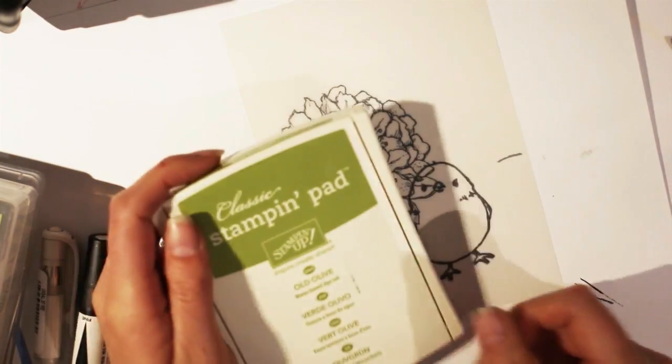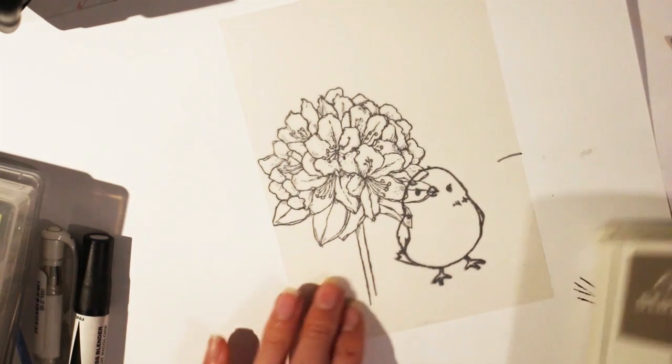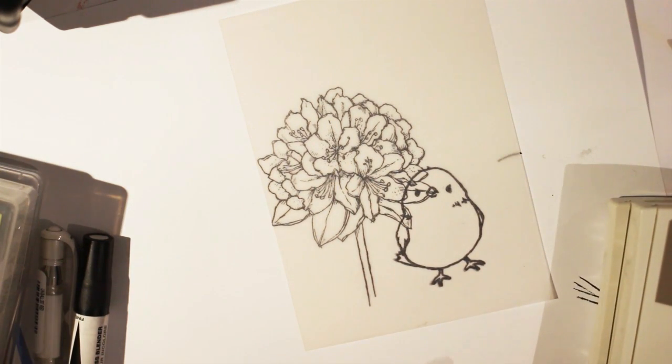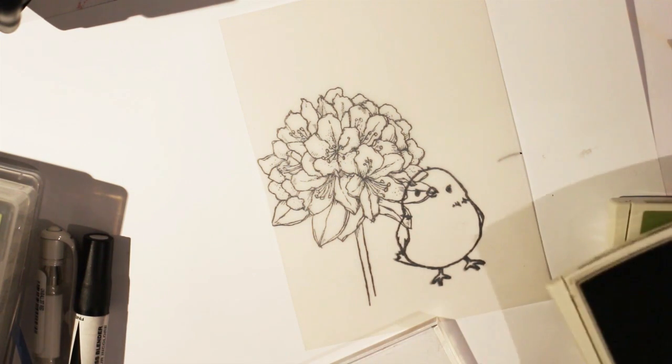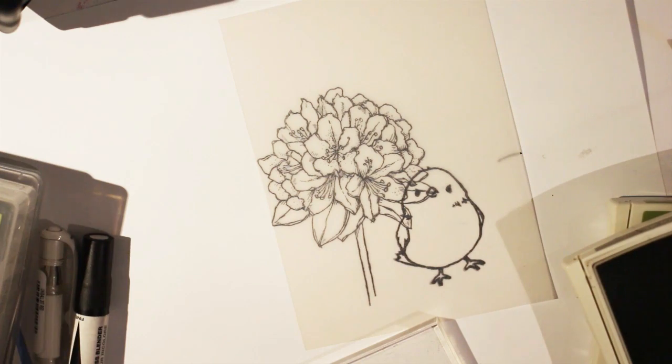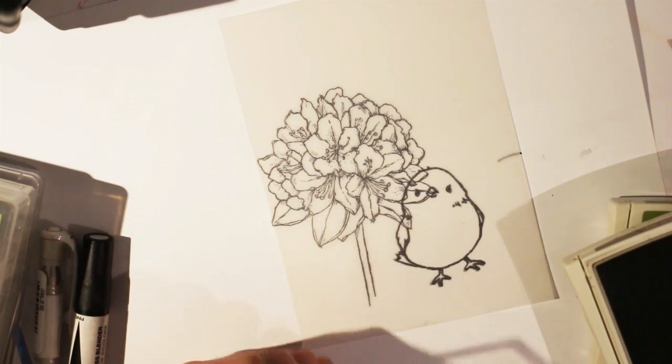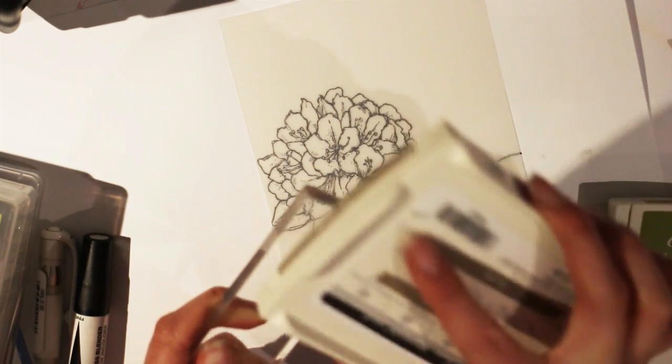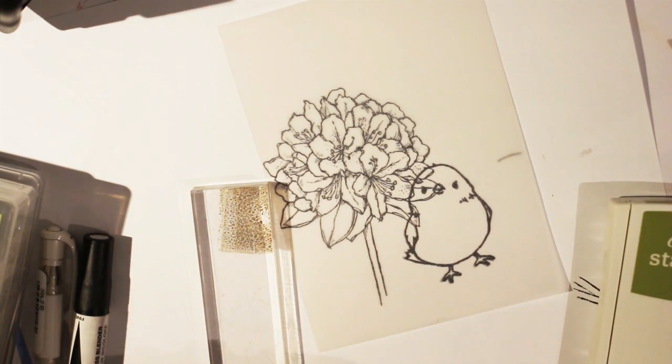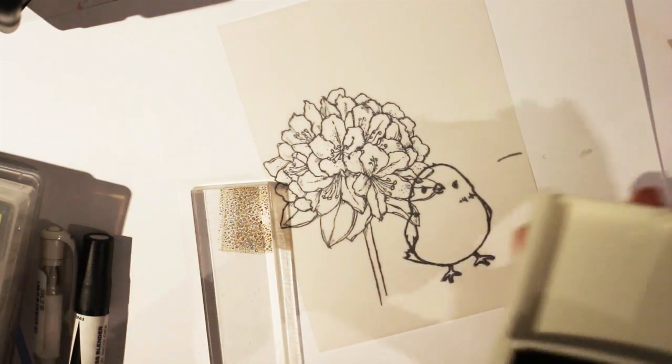I'm going to use the Old Olive by Stamping Up. And this one is Tip Top Taupe. I love taupe so much. My whole house is painted in taupe colors. So in the video it said to use, my previous video about painting vellum, it said to use a laminated sheet. But I figured out that I can use my stamping blocks because they're easy to clean. So that is what I'm going to do. Just dab that on there.